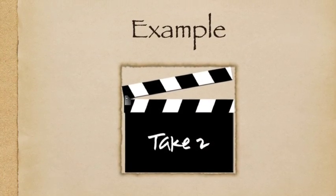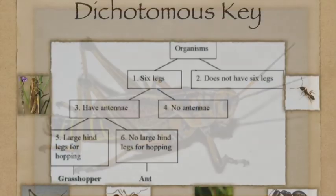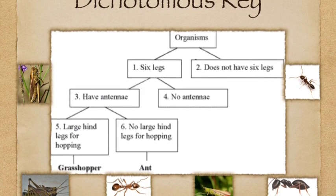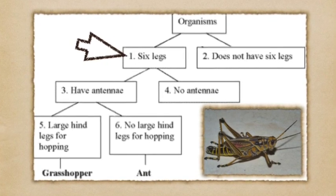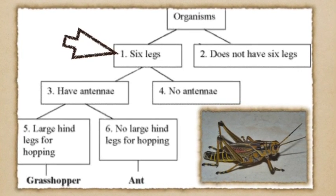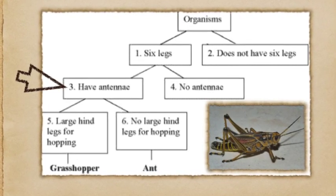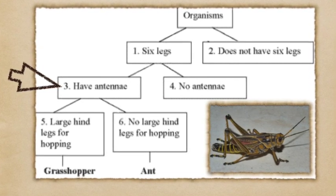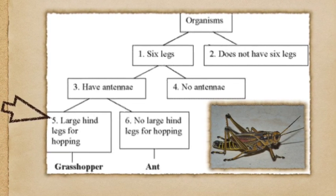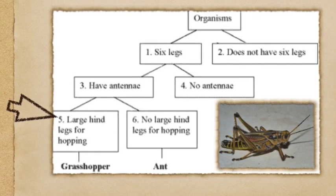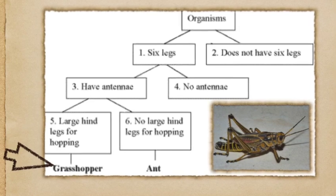Let's do another example, this time with a living organism. Here is our mystery organism. Here is our dichotomous table that will help us identify it. Our first set of questions asks if our organism has six legs or does not have six legs — ours does have six legs, so let's follow the branch. The next set of paired statements are 'has antennae' or 'no antennae' — our organism does have antennae. That branch leads us to our final statements: large hind legs for hopping or no large legs for hopping. Our organism does have large legs for hopping, so our organism is a grasshopper.